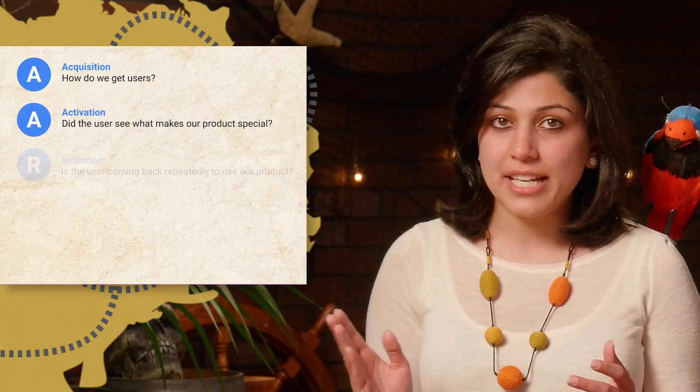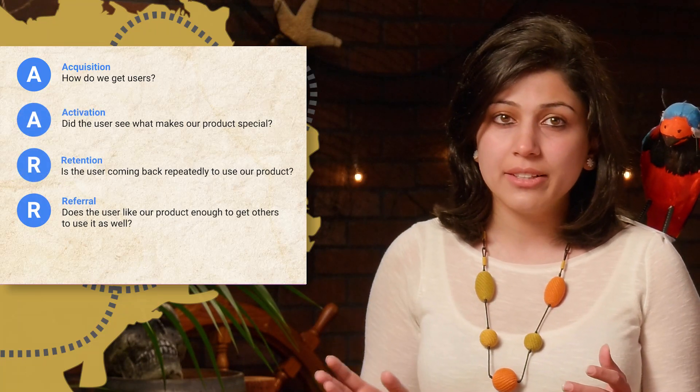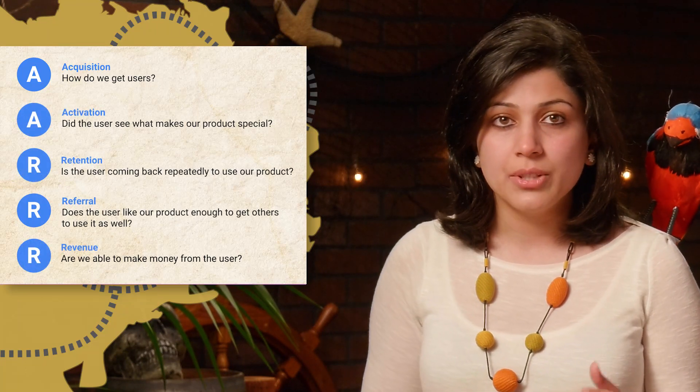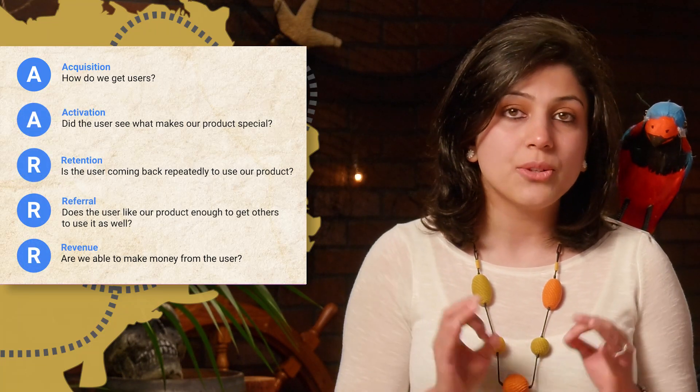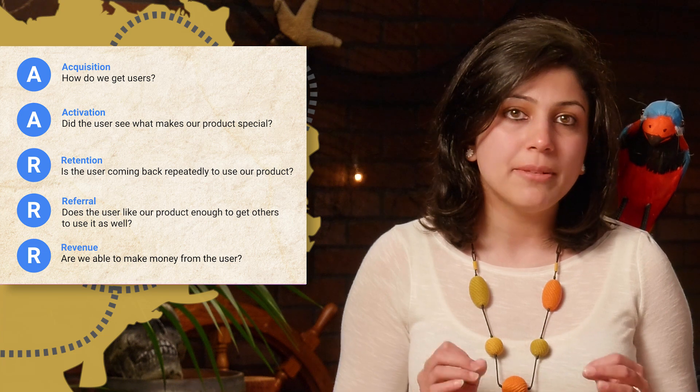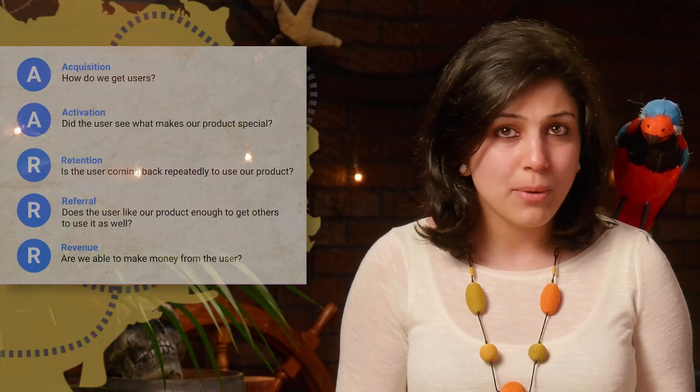So let's summarize the user life cycle. We have the following five stages: acquisition, activation, retention, referral, and revenue. These five stages are together called pirate metrics. Take the first letter of each of the elements and you get... ARRRRRR!